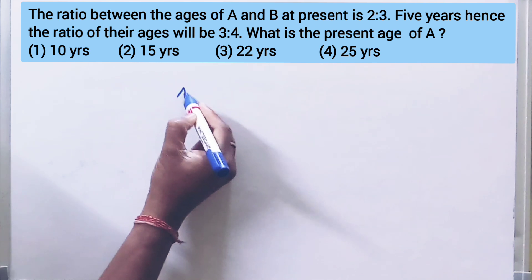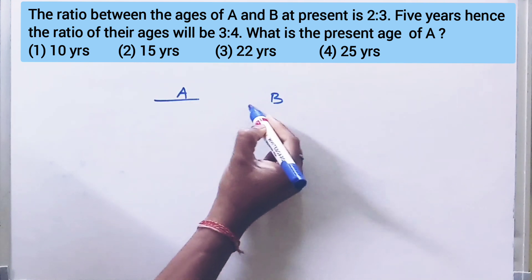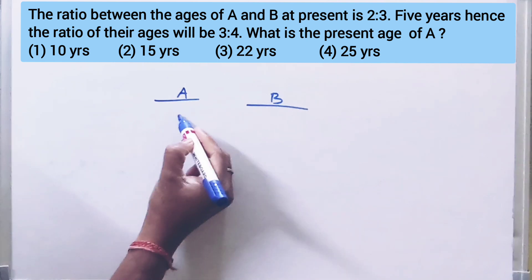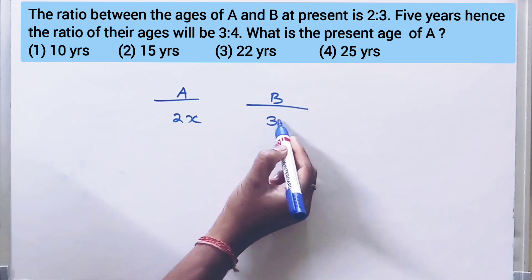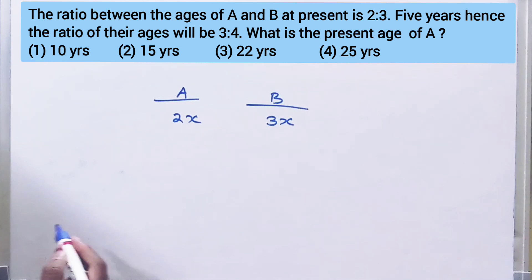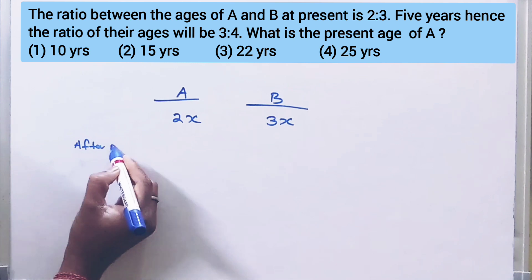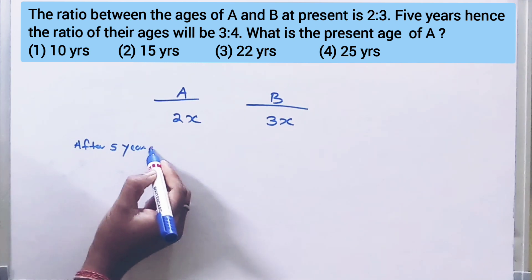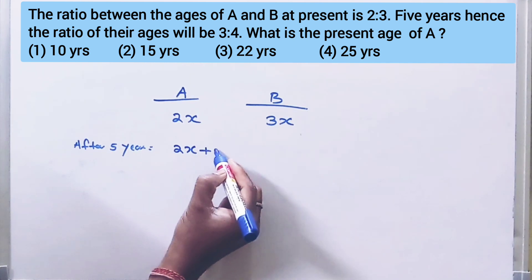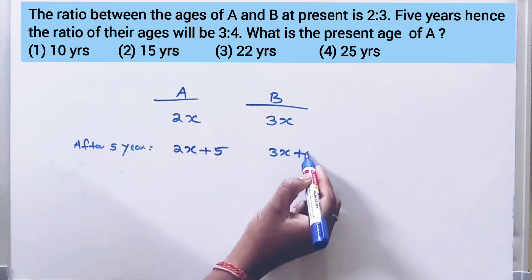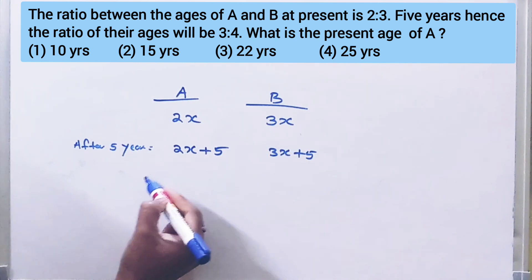Let A equal 2x and B equal 3x. Then the ratio between the age of A and B at present is 2 is to 3. 5 years hence, after 5 years, the ratio of their age will be 3 is to 4. So A becomes 2x plus 5, and B becomes 3x plus 5.